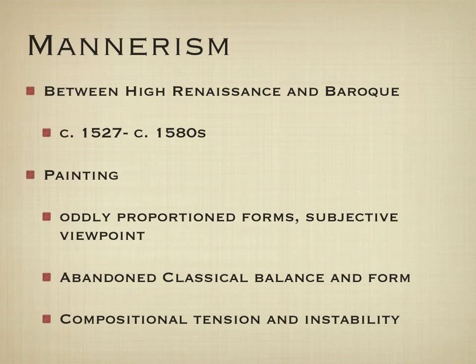In Mannerism, where the High Renaissance had mathematically correct proportions, we see very oddly proportioned forms, lots of acid-like colors — silvers, browns, grays — and an abandonment of those classical ideas of balance and form. The composition shows imbalance and instability, and again that's to reflect the political and social turmoil of the time.